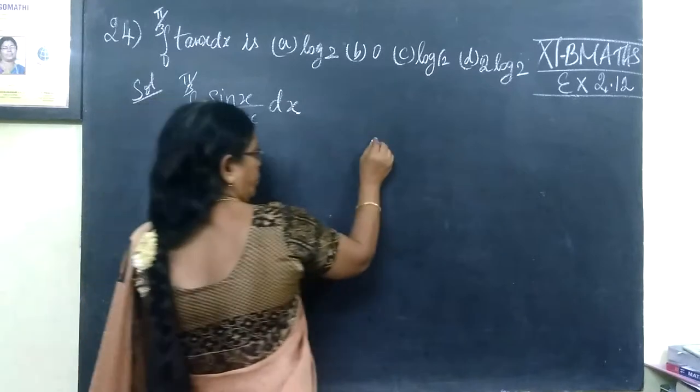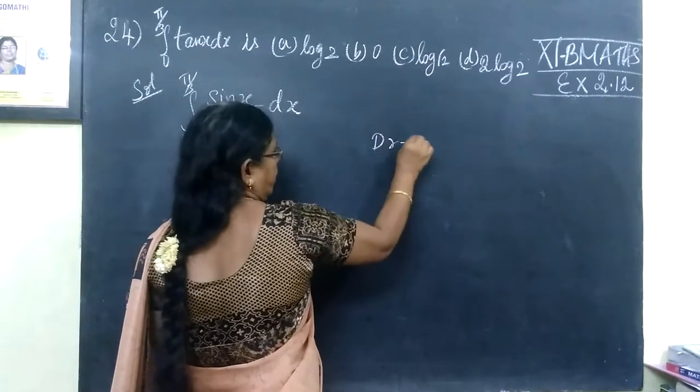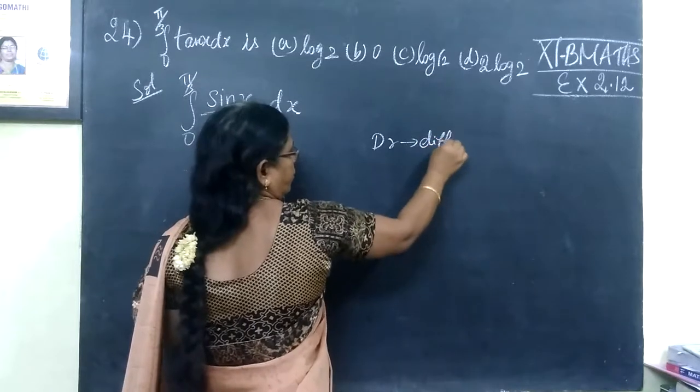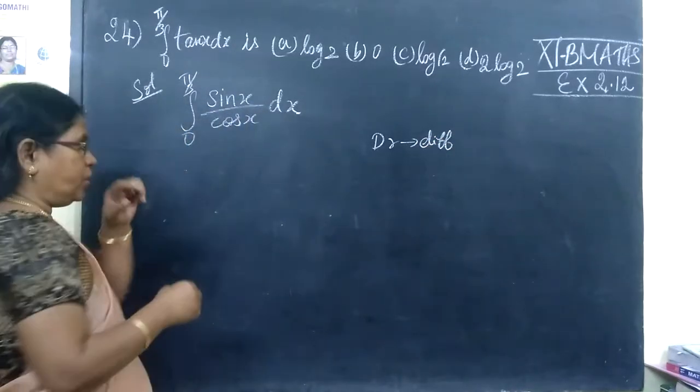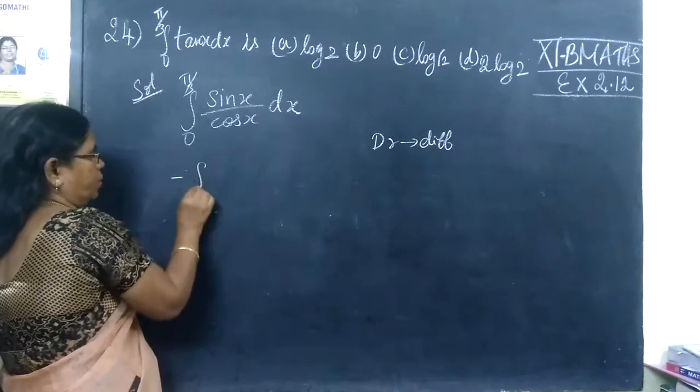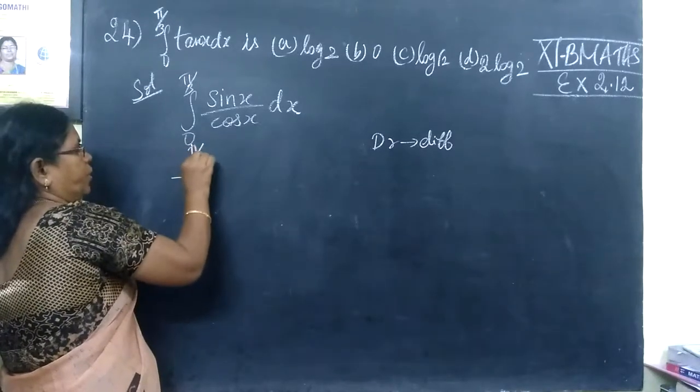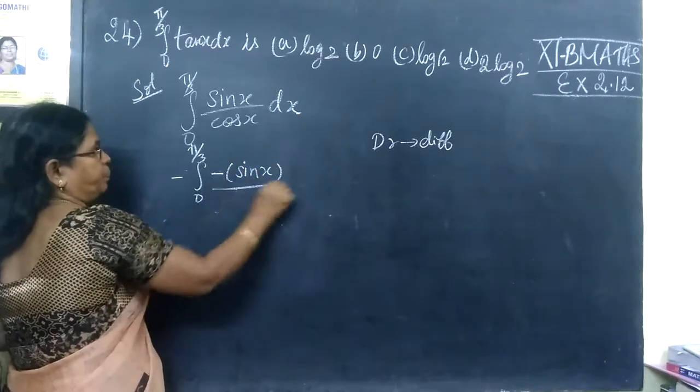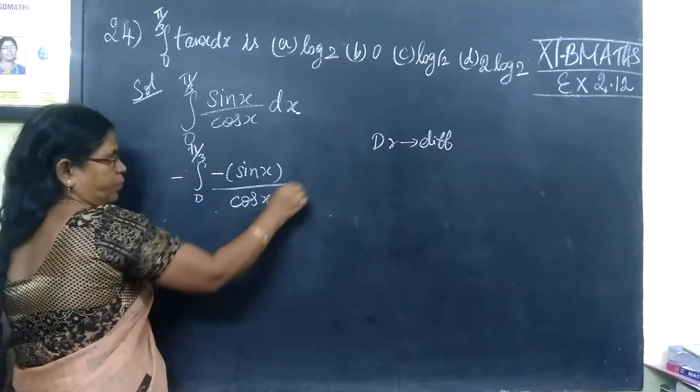Now, from the denominator we can see the form. So we multiply and divide by minus. Multiply and divide by minus, then put the minus here and minus there.